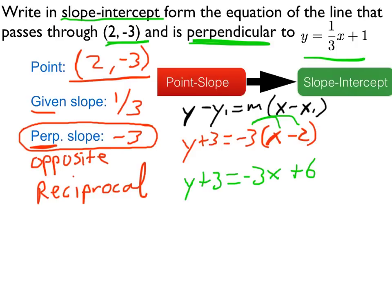And then lastly, we'll subtract 3 from both sides of the equation. And there we go, all done. Start with point-slope, and then change it into slope-intercept form.